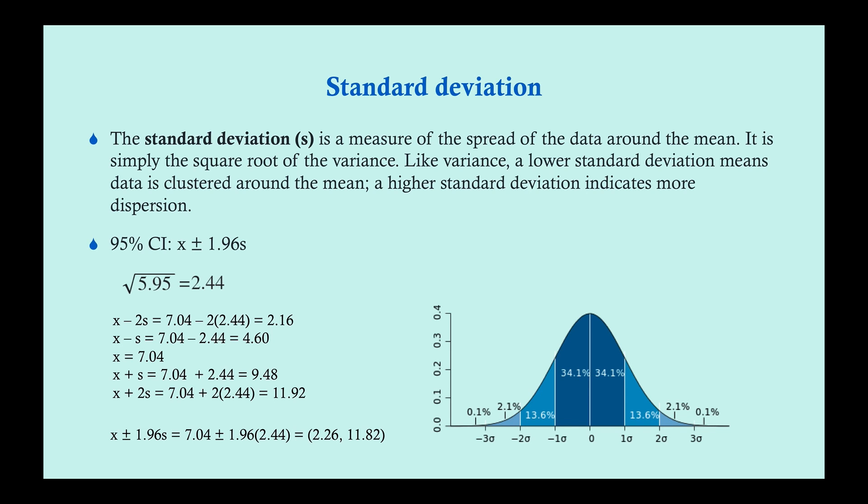Standard deviation is simply the square root of the variance. It measures a very similar concept — if the variance is s squared, then the standard deviation is s. Like variance, it is a measure of the spread of the data around the mean. A lower standard deviation means data is clustered around the mean, giving a sharper peak. A higher standard deviation indicates more dispersion and a flatter curve.